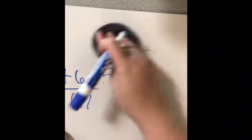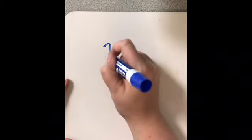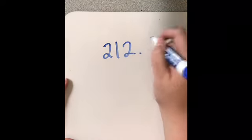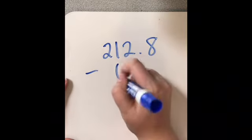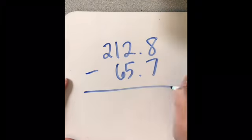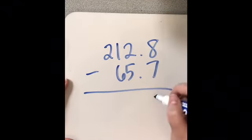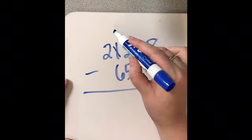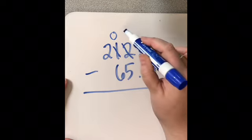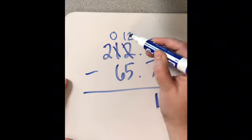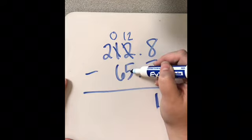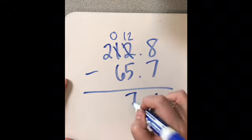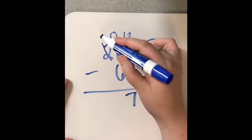Let's do find the difference. So we've got 212 and 8 tenths minus 65 and 7 tenths. So 8 minus 7 is 1. 2 minus 5, I won't have enough, so I need to borrow from my neighbor. So instead of 1, they've got 0, and instead of 2, I now have 12. So 12 minus 5 would be 7. 0 minus 6, can't do it, so we borrow.